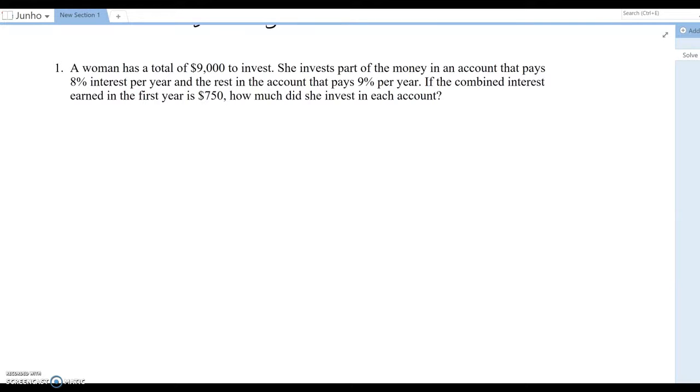She invests part of the money in an account that pays 8% interest per year and the rest in the account that pays 9% per year. If the combined interest earned in the first year is $750, how much did she invest in each account?